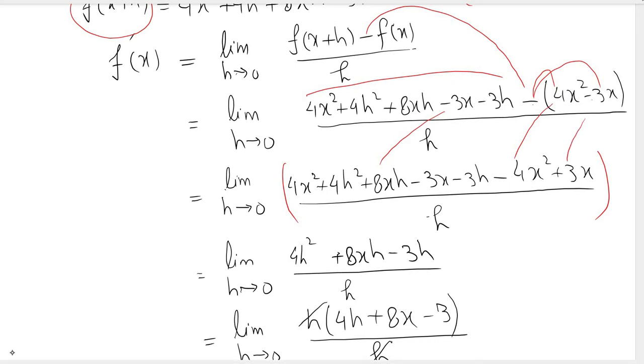Now this is plus 3x and we have minus 3x, so they cancel out. We have minus 4x squared and plus 4x squared. So we are left with 4h squared, 8xh, and minus 3h.